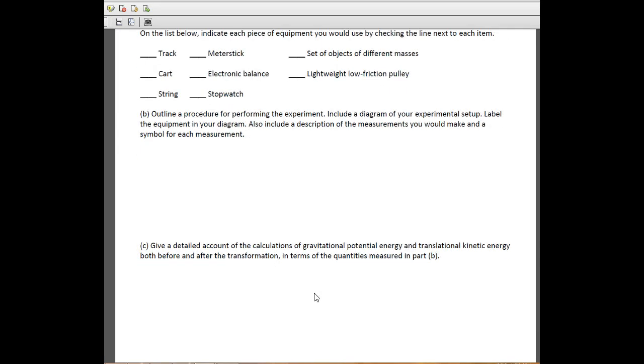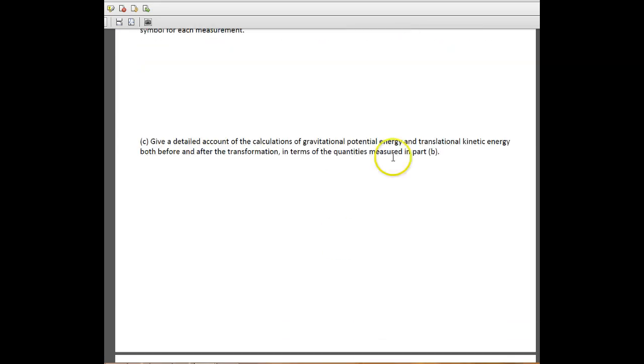For part C, it says give a detailed account of the calculations of gravitational potential and translational kinetic energy both before and after. Notice that it does say of both, for both before and after in terms of the quantities identified or measured in part B.